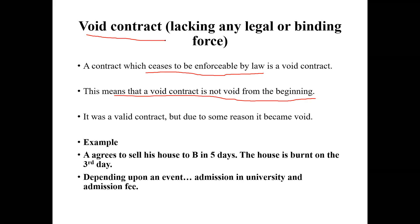For example, A agrees to sell his house to B in five days. They have a valid contract, but the house burns down on the third day. Now A cannot fulfill the promise made in the contract. It becomes impossible for A to fulfill its contractual promises, so the contract — which was valid and enforceable by law initially — becomes unenforceable and is now a void contract due to impossibility of performance.